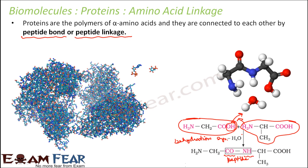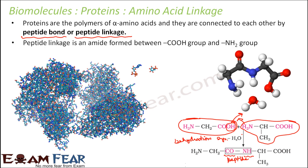All the complex structures of proteins — and they are really complex — are formed by this simple process. The peptide linkage is an amide formed between the COOH group and the NH2 group. This is essentially the amide bond.